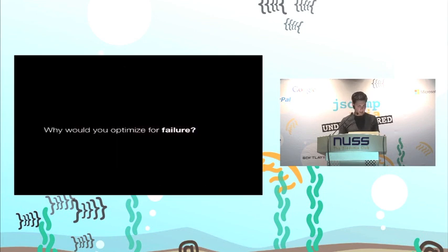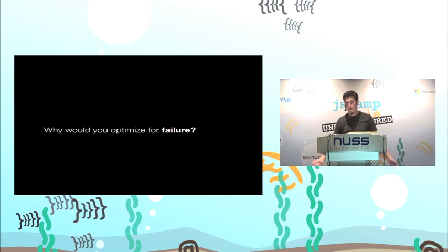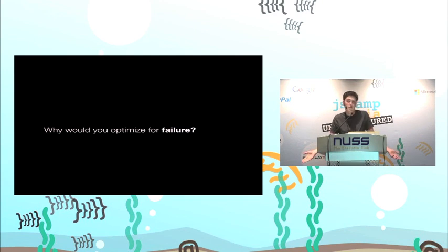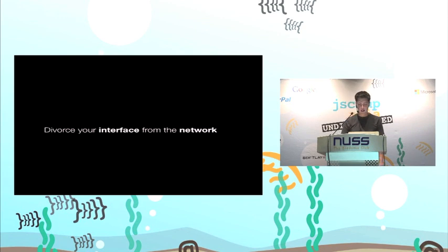So the question is: why would you optimize for failure? Most network requests are going to go through absolutely fine. Let's say you're updating a user — that request, as long as you've done everything right on the server, is going to get through fine. Of course there will be bugs and requests will fail, but why would you optimize for failure? Why not optimize for the optimal scenario where the server responds correctly? Hopefully failures — if you've done your job right — will only happen a tiny amount of the time. So you've got to divorce your interface from your network.